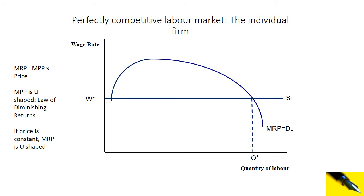So the MPP curve is U-shaped. Therefore, if MRP is MPP times price and MPP is U-shaped, then MRP will also be U-shaped as long as the price is constant.